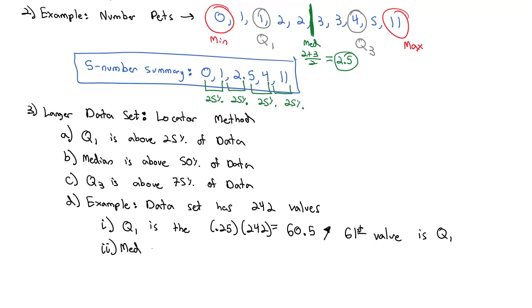Similarly, if I wanted to find the median, the median is above 50% of the values. So we take 0.5 times 242, and that's 121. Now, that's a whole number. So instead of rounding up, we found the median is sometimes between two values if there's an even number of values, like in this case. So if we get a whole number with the locator method, that means the median is between the 121st value and the 122nd value. And so we would average those numbers together, similar to what we did with the 2 and the 3 in our previous example.